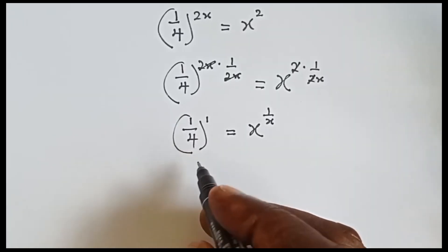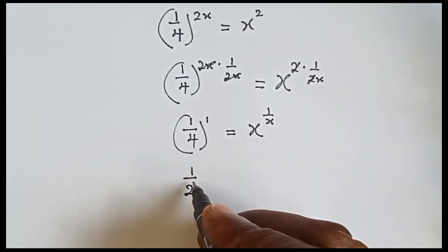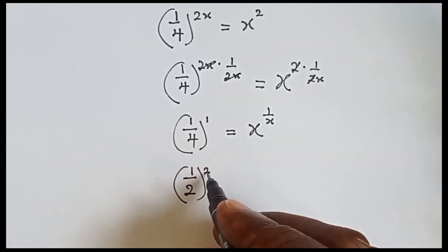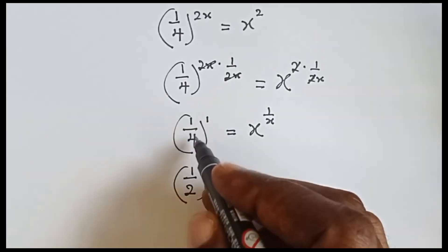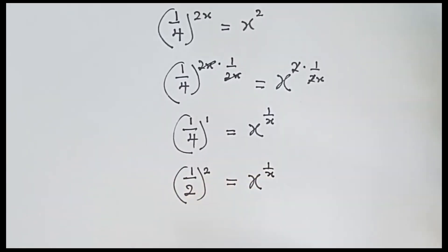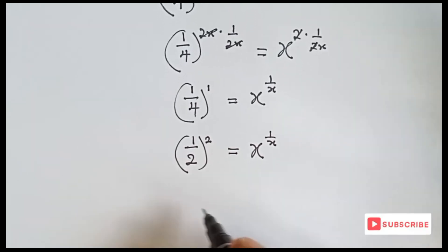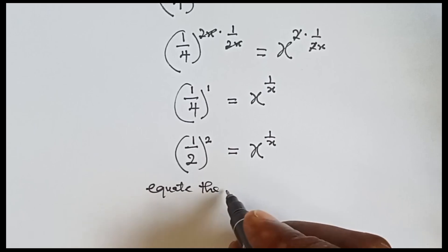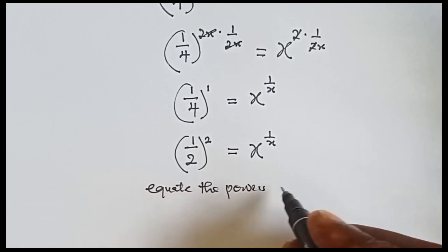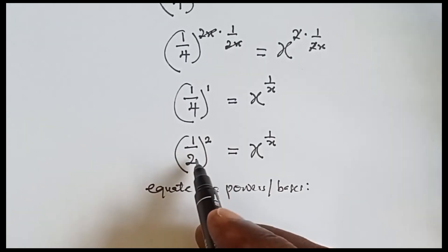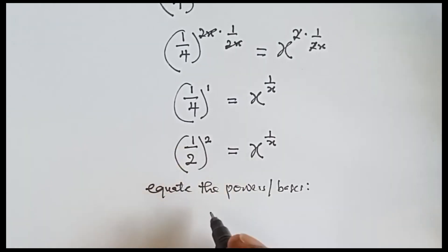We can also write this as 1 over 2 raised to power 2, so multiplying gives us 1 over 4 equals to x raised to power 1 over x. From here we can equate the bases and the powers. When we equate the bases, that is 1 over 2 equals to x.